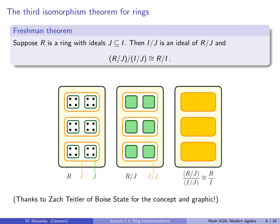Next is the third isomorphism theorem for rings, also called the freshman theorem. This says: if J is contained in I as ideals of R, then I/J is an ideal of R/J, and R/J ÷ I/J ≅ R/I. This is what every college freshman wants to do — just cancel the two J's. There's more to it, but I'll use the same graphic by my friend Zach Tyler of Boise State. The proof is essentially the same as for groups, just for rings instead.